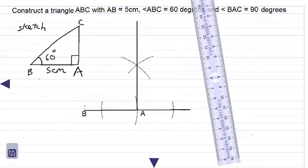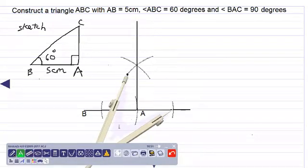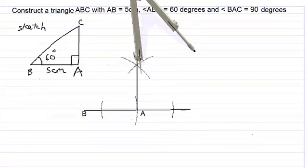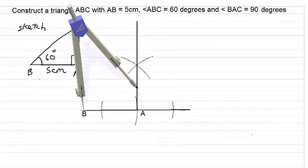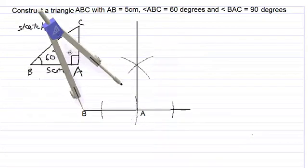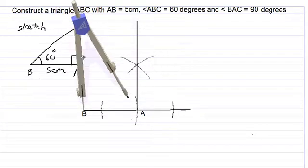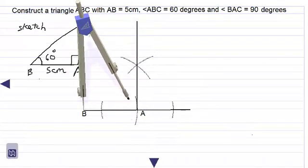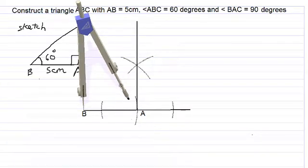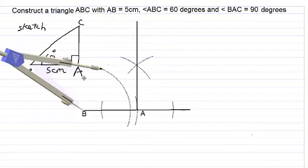Now it's time to get our 60 degree angle at point B. Let us take our compass again, place it at point B, we draw a construction arc as shown using our lighter pencil. Draw a construction arc as big as this, yes.